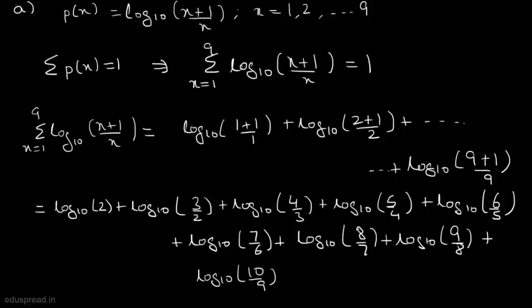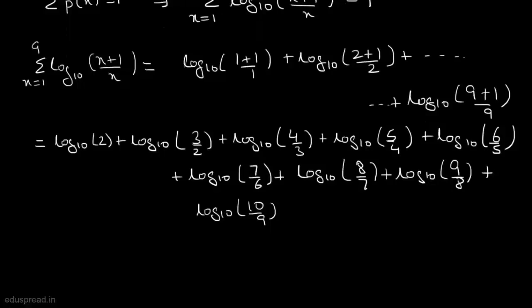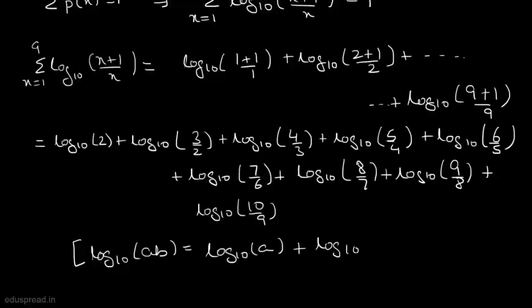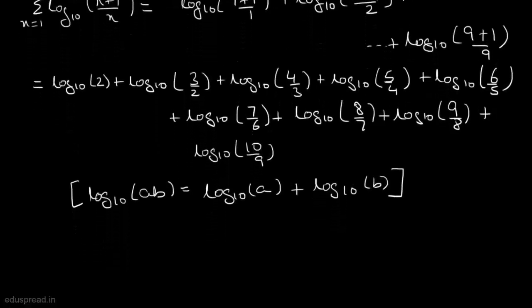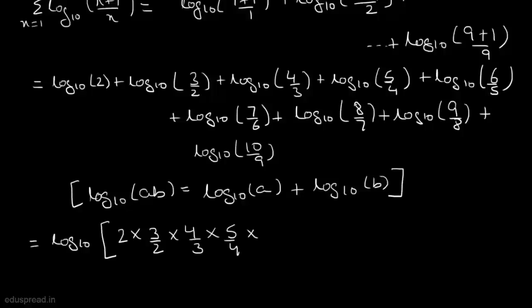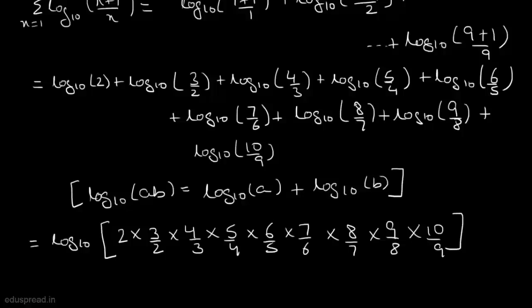We know there is a property according to which log base 10 of (a·b) equals log base 10 of a plus log base 10 of b. Using this property, we can write that this entire expression equals log base 10 of the product: 2 × (3/2) × (4/3) × (5/4) × (6/5) × (7/6) × (8/7) × (9/8) × (10/9), and all these values cancel telescopically.